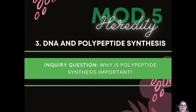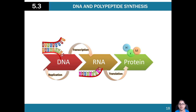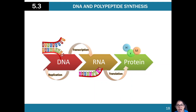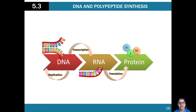Let's have a look at DNA and polypeptide synthesis. Our inquiry question is: why is polypeptide synthesis important? DNA is important for survival because one of the key things it does is allow us to make the proteins we need. Most processes in our bodies require proteins — the enzymes we have are proteins, the hormones we have are proteins, so proteins are really important.